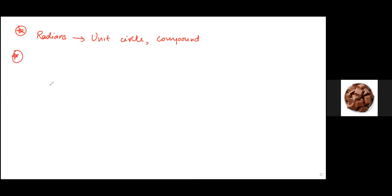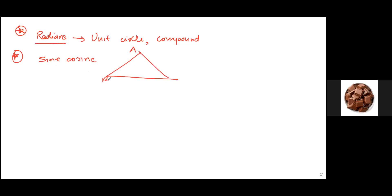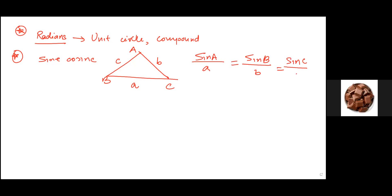The three formulas that we need to remember are the sine and cosine rule formulas. If we have a triangle with vertices A, B, and C - where opposite to A is side a, opposite to B is side b, and opposite to C is side c - then the sine rule is: sine of angle A over side a equals sine of angle B over side b equals sine of angle C over side c. That's your sine rule.